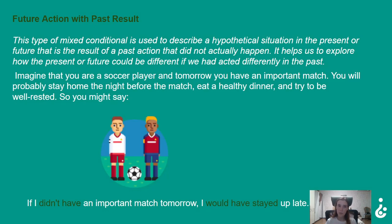Future action with past result. This type of mixed conditional is used to describe a hypothetical situation in the present or future that is the result of a past action that did not actually happen. It helps us explore how the present or future could be different if we had acted differently in the past. Imagine you are a soccer player and tomorrow you have an important match. You will probably stay home the night before, eat a healthy dinner and try to be well rested. So here you might say: 'If I didn't have an important match tomorrow, I would have stayed up late.'